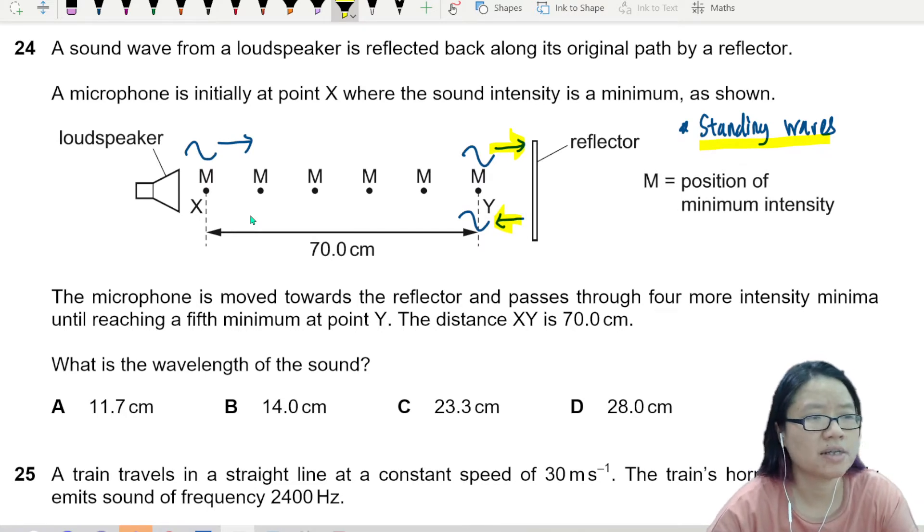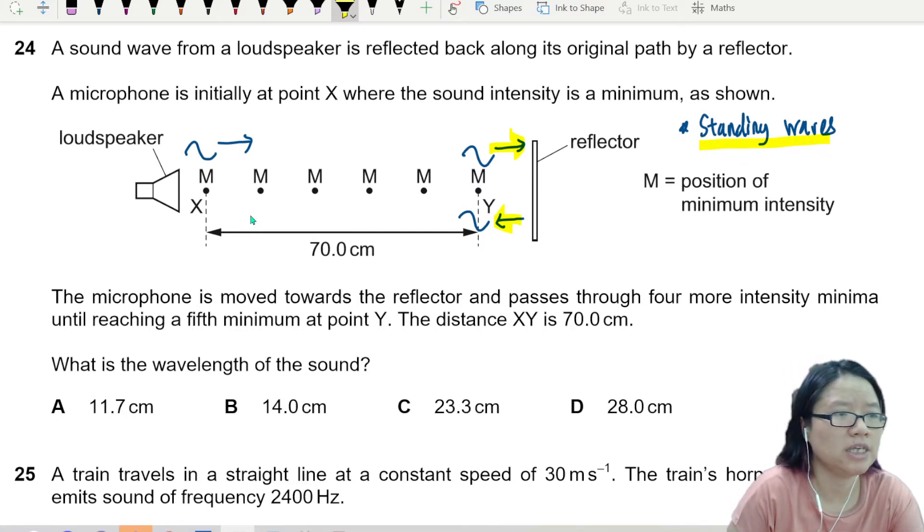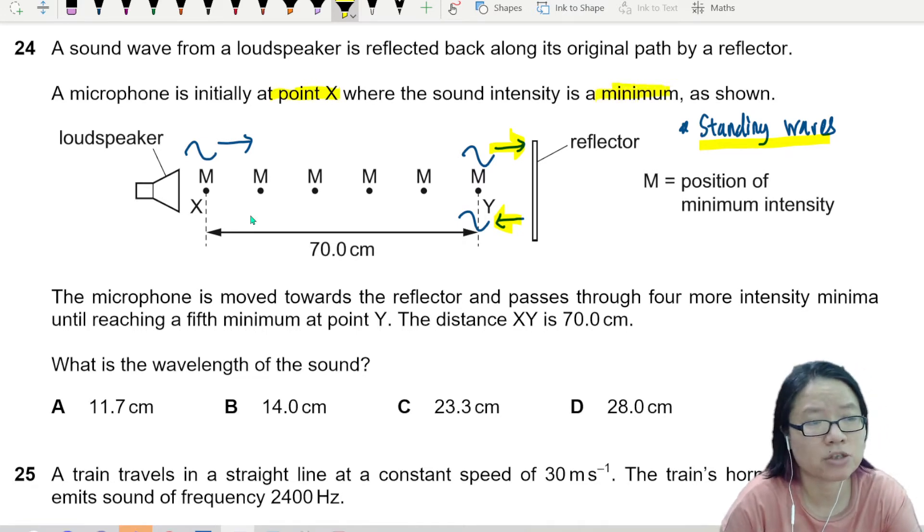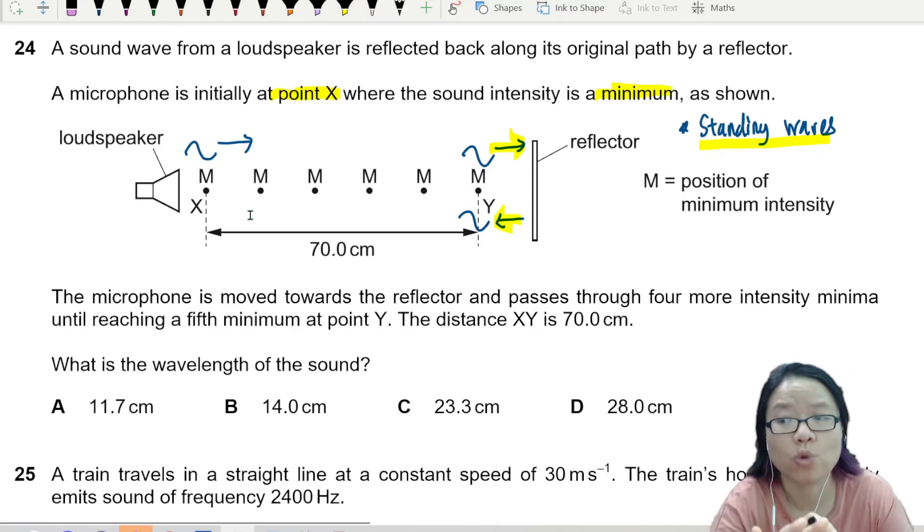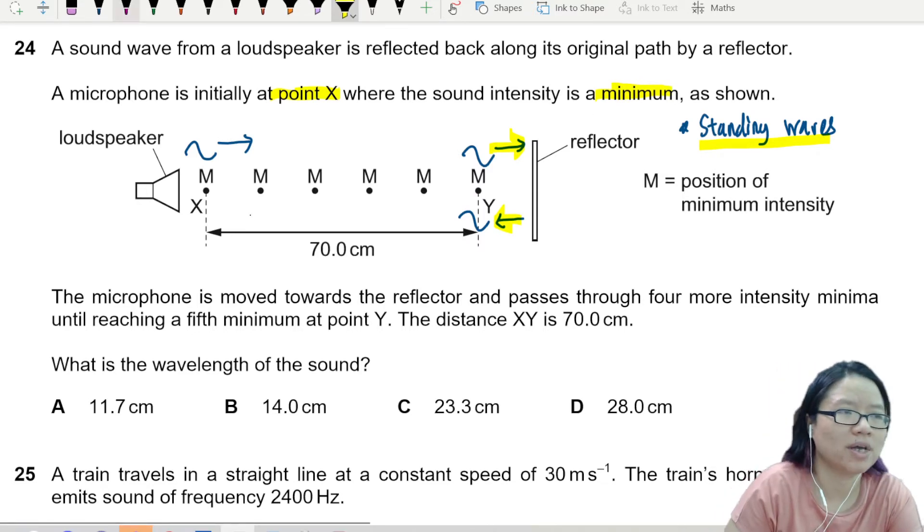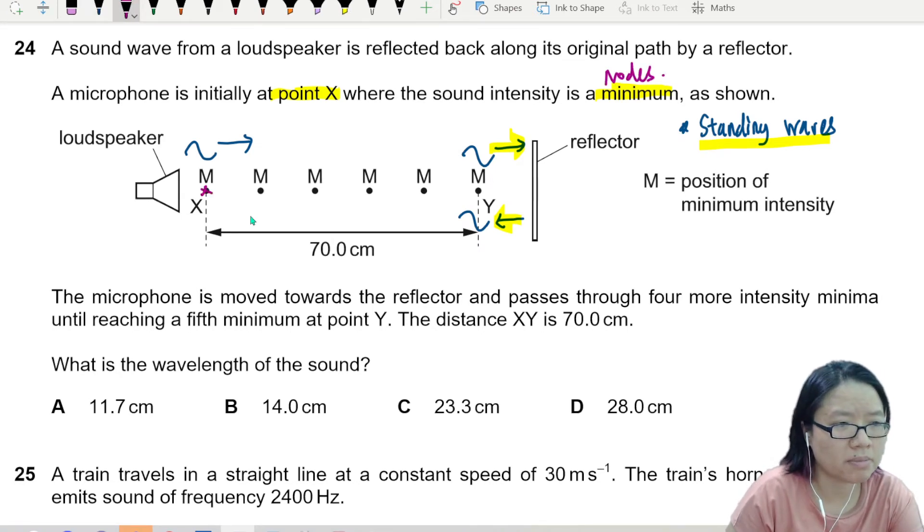So it says here that a microphone, initially at point X, where the sound intensity is minimum, is shown. So the very annoying one, normally they will call these nodes, but today they decide to call it minimum. So this is minimum, minimum, all the minimum points here.